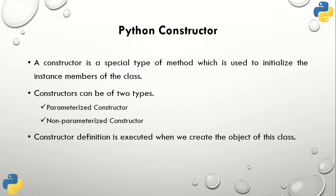As I mentioned, we haven't defined any constructor yet, so by default a default constructor will work. A constructor means to create something — to give memory to our data members or member functions of the class. This is not possible without a constructor. If you haven't defined your own constructor, the interpreter will call a default constructor to create your object. You can create any number of objects from a class. If you define your own constructor, the default constructor will not work — the user-defined constructor works instead.